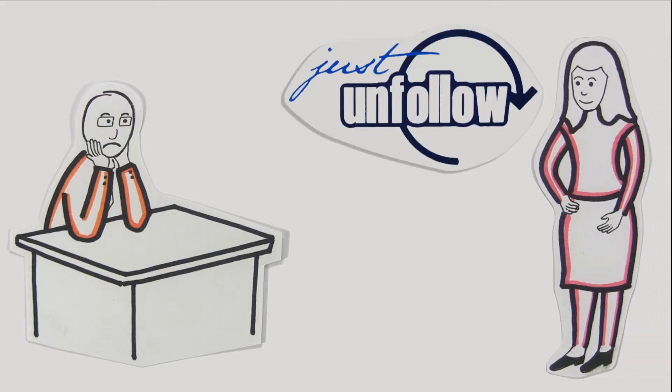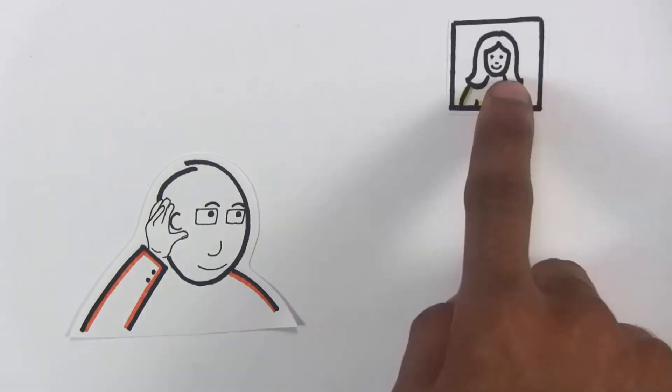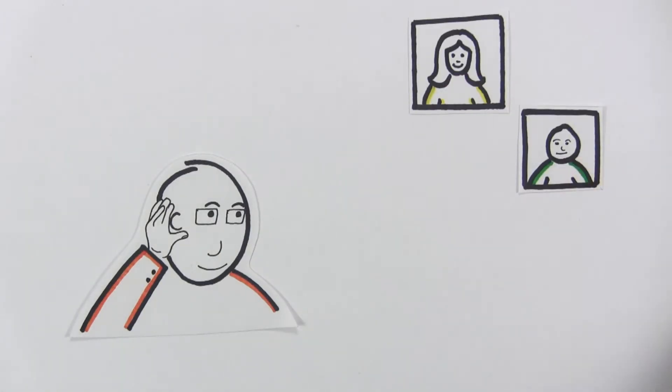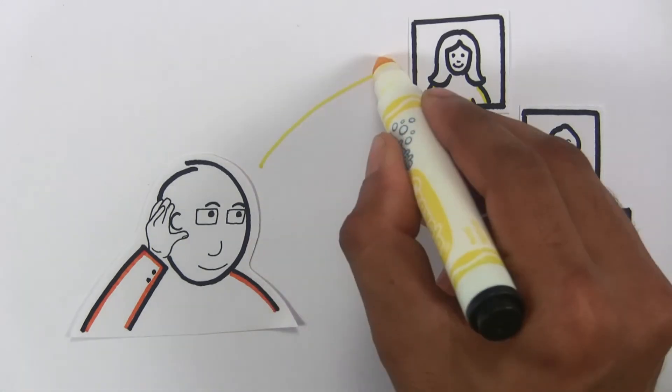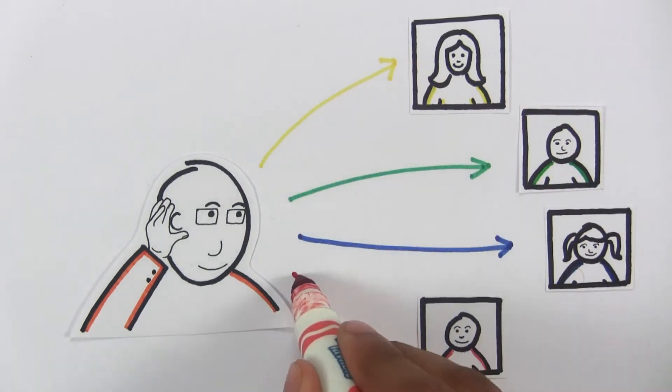Happy, she suggests John try Just Unfollow. After exploring, he finds the Copy Follower feature, using which he can now follow his competitors' followers easily.